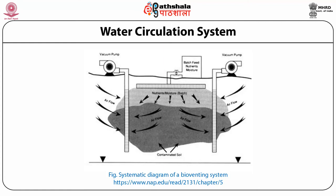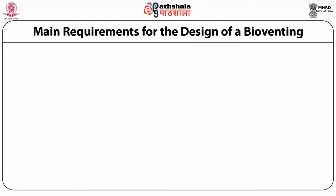This figure shows the bioventing system — this is the water circulation system of the bioventing system. The particular bioventing process is used when soil is contaminated with petroleum products. When air is circulated at the bioventing site with the help of a vacuum pump, facultative or aerobic bacteria develop at the site. They absorb nutrients and moisture, removing gaseous byproducts, and the whole soil is cleaned by using the method of bioventing.